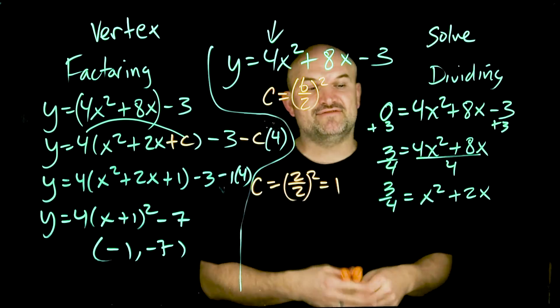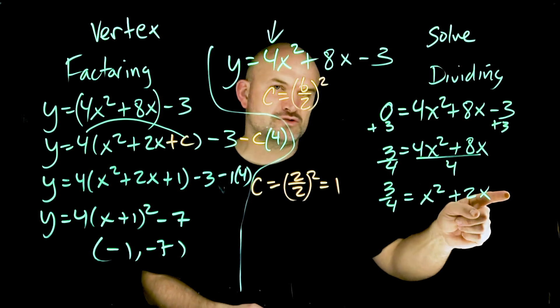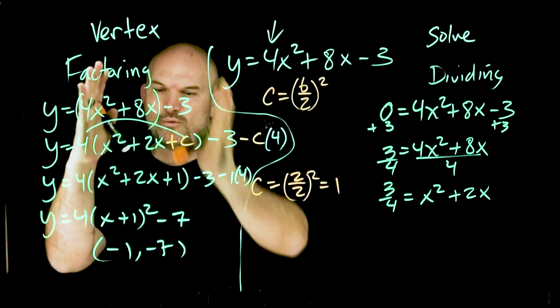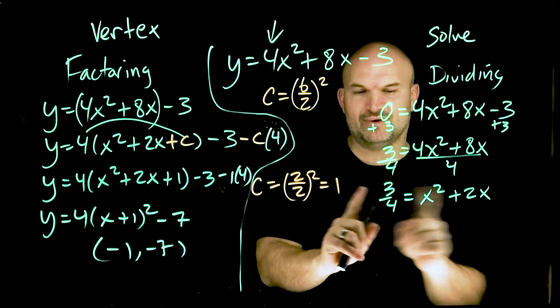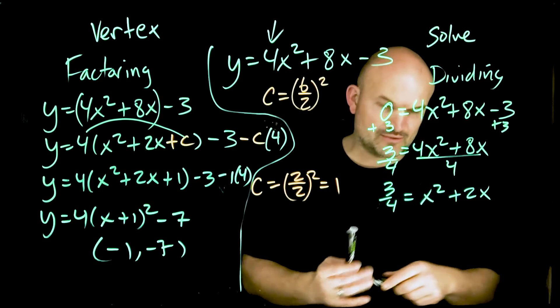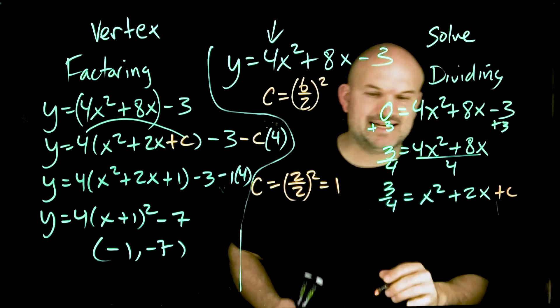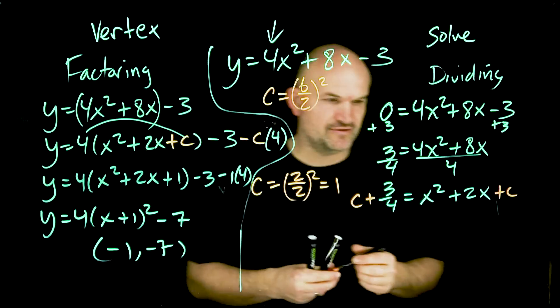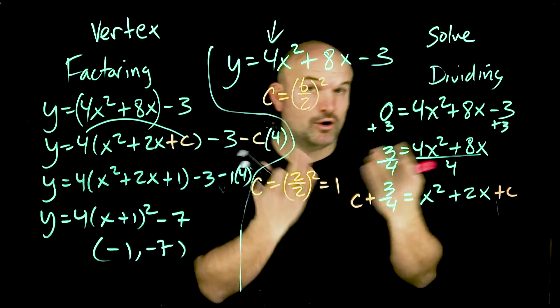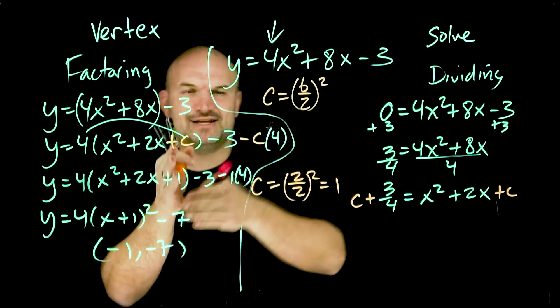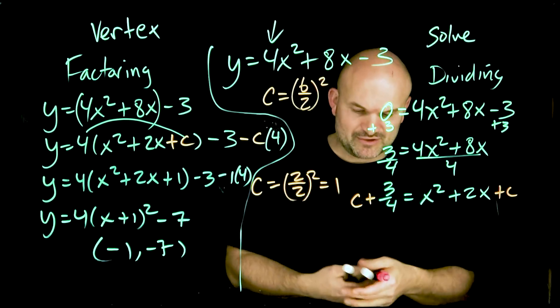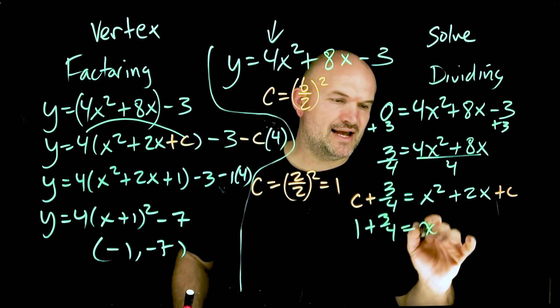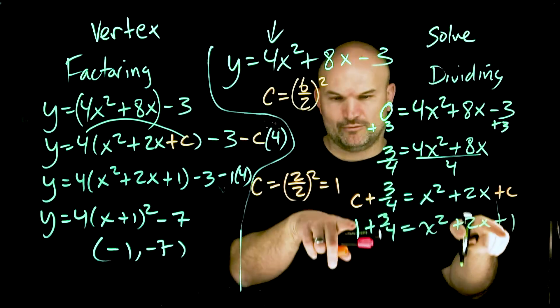Now I have isolated and gotten rid of that four, so now I can complete the square here. Again, we need to find the value c that creates this perfect square trinomial. In this case I do it differently. Rather than adding and subtracting on the same side, I actually want to get everything over to the left hand side. So I'm going to add a c on both sides. Remember whatever you do on one side you have to do on the other. We know the value is one, so I'm simply just going to write that in there. We have one plus three-fourths equals x² plus 2x plus one.